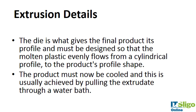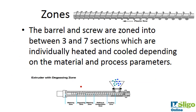The die gives the final product its profile and must be designed so the molten plastic evenly flows from a cylindrical profile to the product's profile shape. After exiting the die, the product is cooled by pulling it through a water bath. To help visualize what a die looks like — think of a play-doh set where play-doh is forced through a mold and comes out in a tube format, or a pasta maker. That's essentially what the die is: it gives the polymer its shape.